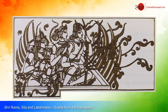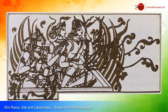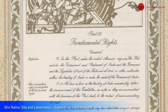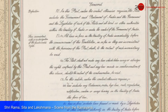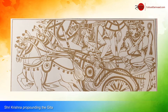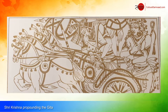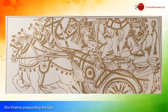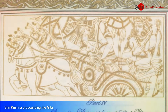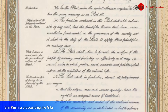Sri Ram, Devi Sita, and Sri Lakshman — the eternal heroes of India who symbolize the victory of Dharma over Adharma — are depicted in a scene from the Ramayana in Part 3, Fundamental Rights. Sri Krishna propounding the infinite ocean of wisdom, the Bhagavad Gita, to Arjun before the commencement of the Battle of Kurukshetra is the subject of the artwork in Part 4: Directive Principles of State Policy.